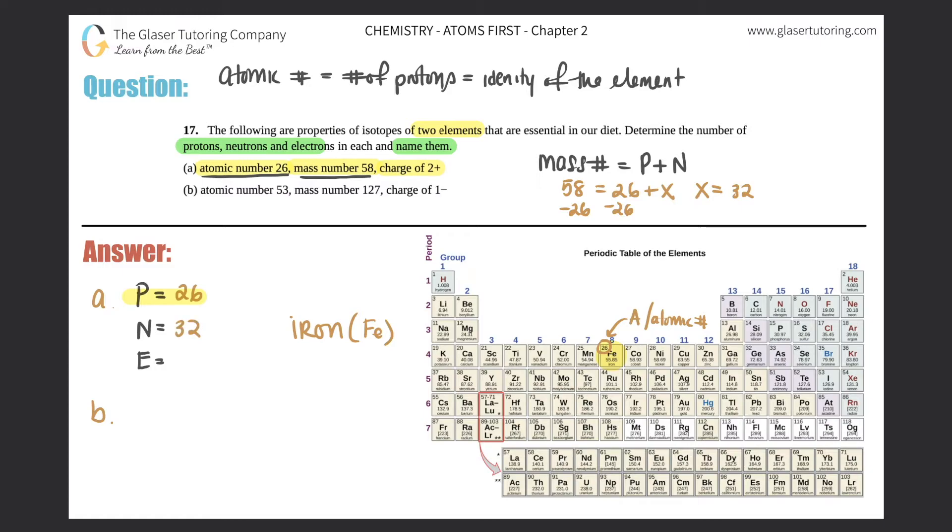Now we have to find out what the number of electrons are, and that comes from the overall charge. In this case, the overall net charge is a plus two. So your net charge, actually, I'm going to put it over here. Net charge equals the number of protons that you have minus the number of electrons you have.